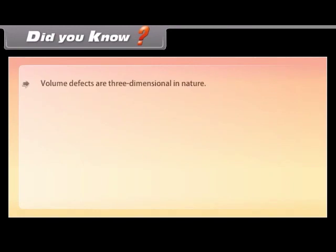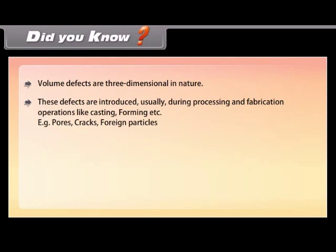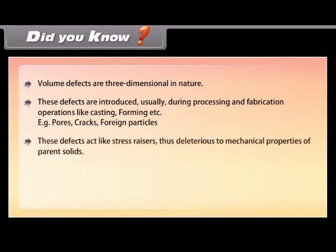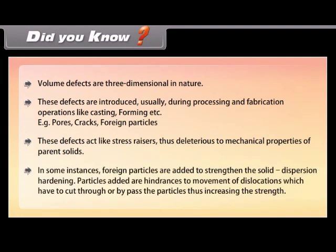Did you know: Volume defects are three-dimensional in nature. These defects are introduced usually during processing and fabrication operations like casting, forming, etc. Examples include pores, cracks, and foreign particles. These defects act like stress raisers, thus being deleterious to the mechanical properties of parent solids. In some instances, foreign particles are added to strengthen the solid — a process called dispersion hardening. Particles added are hindrances to the movement of dislocations, thus increasing the strength.